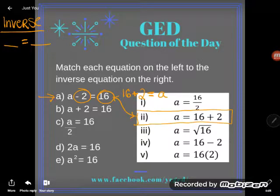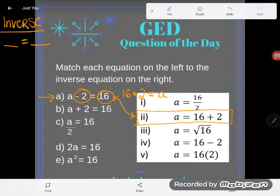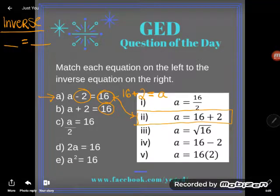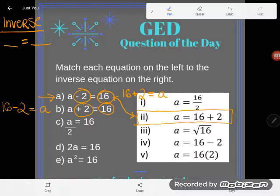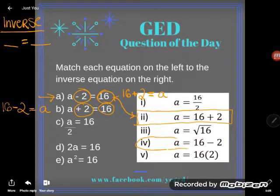Let's take a look at the next one. It says a plus 2 is equal to 16. Again, I could do the opposite here. I could start with what used to be the answer, 16, and instead of adding a 2, I could do the inverse—subtracting 2—and that would get me right back to a. So the inverse of a plus 2 equals 16 is 16 minus 2 equals a, or they wrote it in the opposite order here: a equals 16 minus 2. So b matches up with 4.